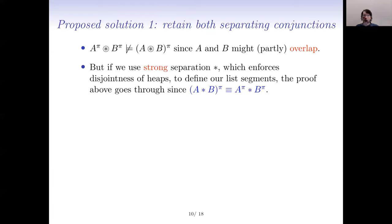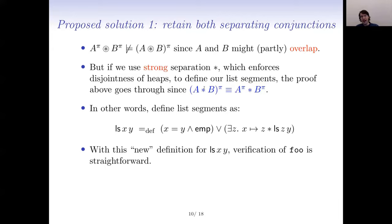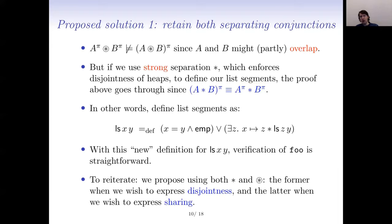However, with a strong star rather than a weak star, things are different: strong star enforces disjointness, so P^π ★ Q^π is equivalent to (P ★ Q)^π — both distribution and factorization hold. So we propose defining list segments using the strong star. Verification of foo then becomes straightforward. This is why we want both kinds of star: sometimes you want to talk about disjointness, and other times you want to express sharing.